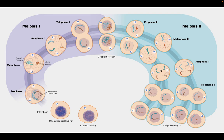When we get into meiosis II, that's where we separate our sister chromatids. The result of this will be cells that are haploid, not diploid. At the end of mitosis, you had cells that were still diploid — they had mom and dad's DNA.